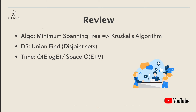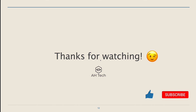To review: the key intuition to solve this question is to build the minimum spanning tree with Kruskal's algorithm, and the key data structure for Kruskal's algorithm is disjoint sets, or union-find. The time complexity of Kruskal's algorithm is O(E log E), where E is the number of edges. The space complexity is O(E + V), where V is the number of vertices. That's all for today — thanks for watching. If you like this video, please give it a like and subscribe to my channel.